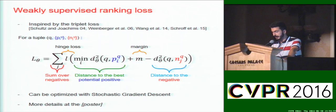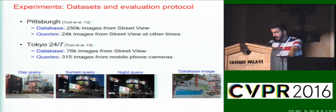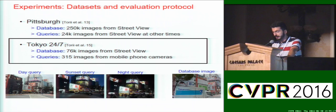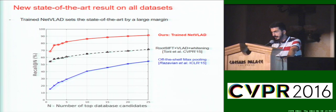We evaluate our method on two standard place recognition benchmarks, which contain street view images from two different cities, Pittsburgh and Tokyo. Concentrating on Tokyo, which is the more challenging benchmark as it contains query images taken at different times of the day including the night, we set the new state-of-the-art by a large margin. The previous state-of-the-art was based on aggregating SIFT into VLAD, and we beat it by 35%.